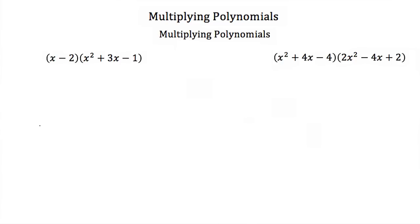Our first example is x minus 2 times x squared plus 3x minus 1. This is just like multiplying two binomials together. All you do is take your first term in your binomial and multiply it by everything in the second polynomial. Then take your second term and multiply that by everything in the second polynomial.